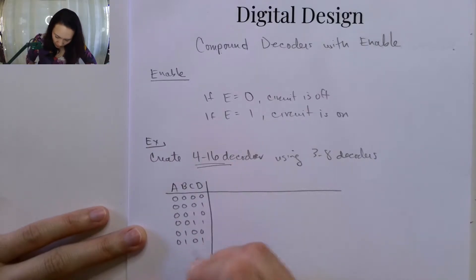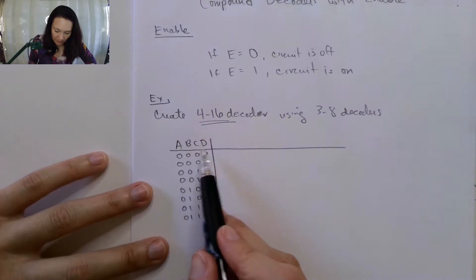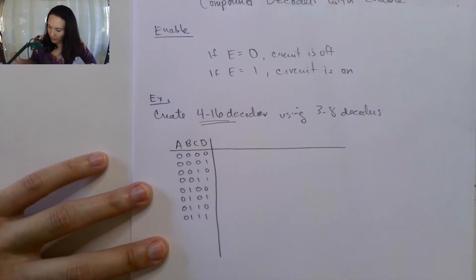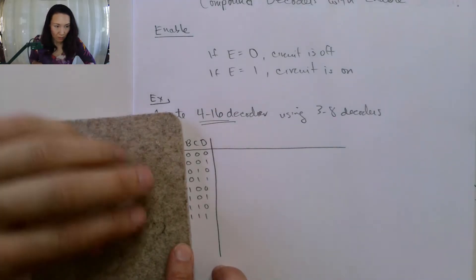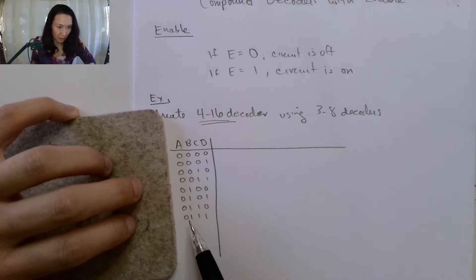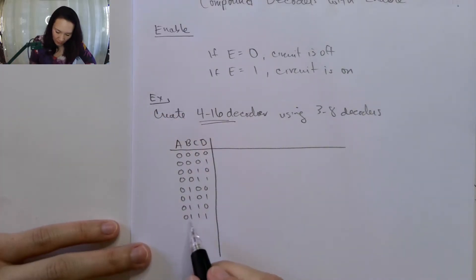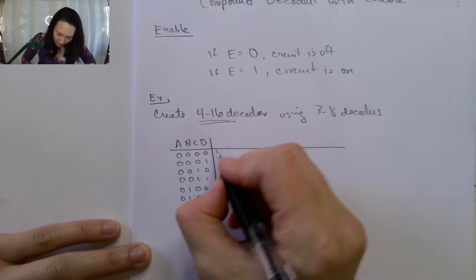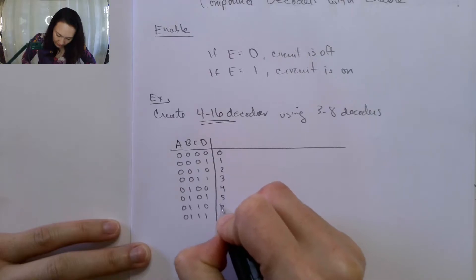Counting from 0 to 7 in binary: 0, 1, then continuing through the pattern. This gives us decimal values 0, 1, 2, 3, 4, 5, 6, 7.